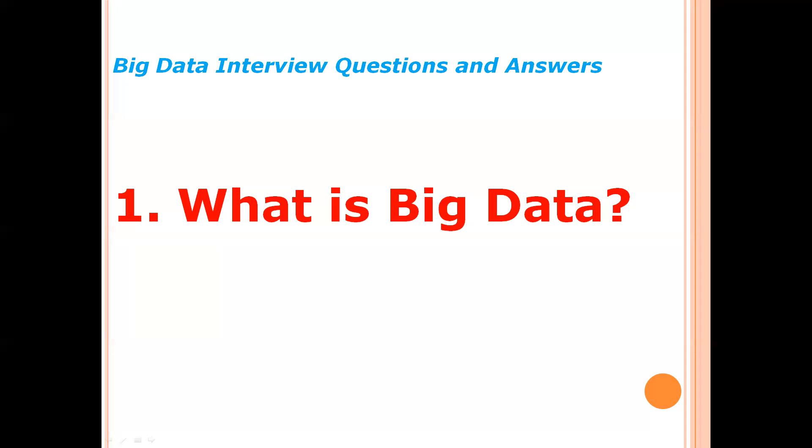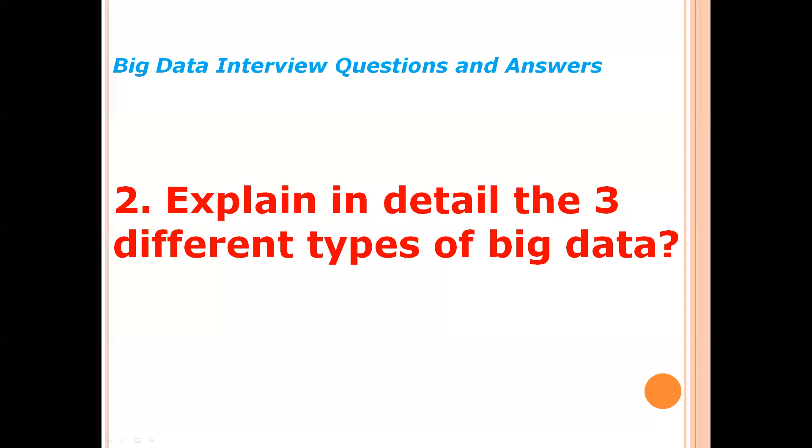Each type of big data requires a different set of tools for storing and processing. Explain in detail the three different types of big data. Big data is classified into three types: structured data, unstructured data, and semi-structured data.